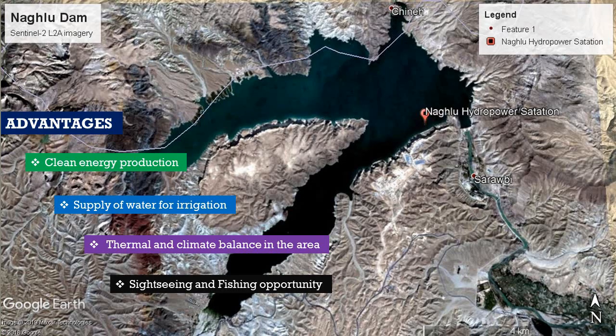Construction of site dams has several advantages: producing clean energy for the environment, supply of water for irrigation, and contributing to thermal and climate change balance in the area. Additionally, there are sightseeing and fishing opportunities.